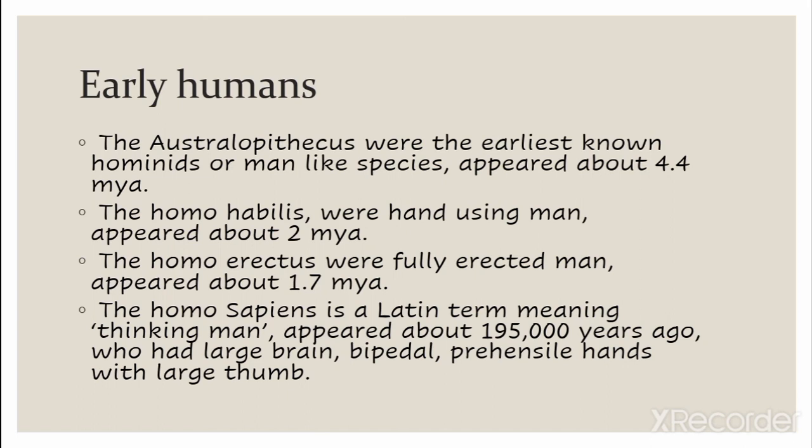Prehensile hands — prehensile hands means hands that can grip or hold onto things. For example, consider a cat's paws or legs — they are not prehensile; they cannot grip or hold onto things the way human hands can.